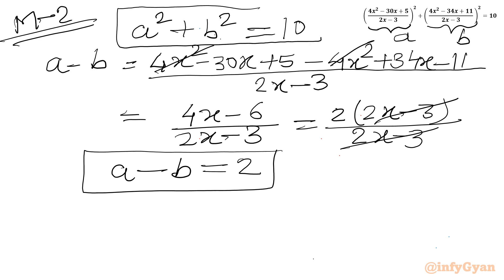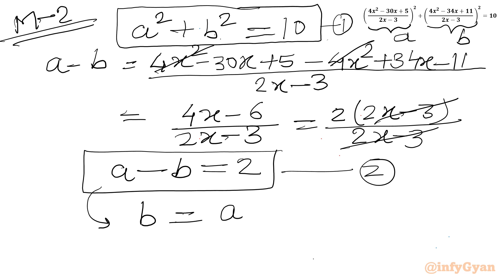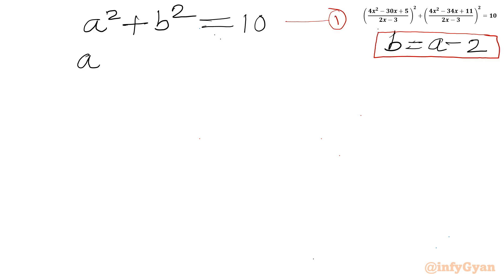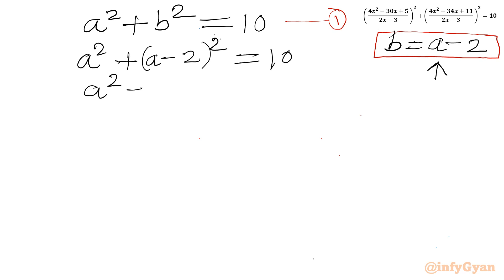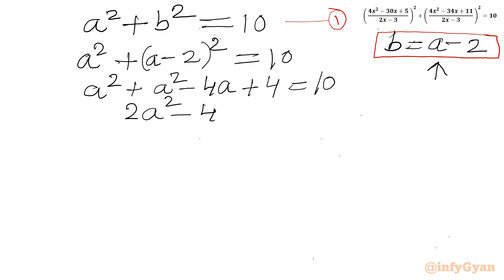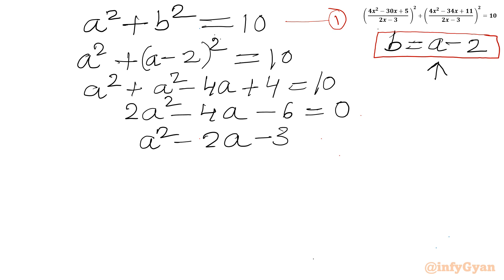We have A² plus B² equals 10 as Equation 1, and A minus B equals 2 as Equation 2. From Equation 2, B equals A minus 2. Substituting into Equation 1: A² plus (A minus 2)² equals 10, so A² plus A² minus 4A plus 4 equals 10, giving 2A² minus 4A minus 6 equals 0, or A² minus 2A minus 3 equals 0.